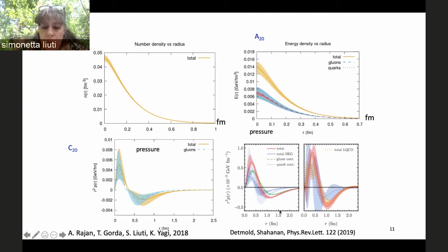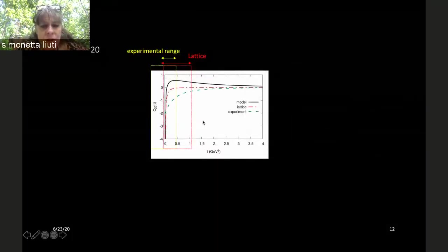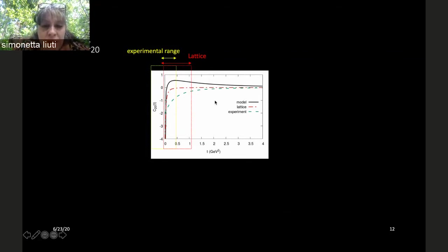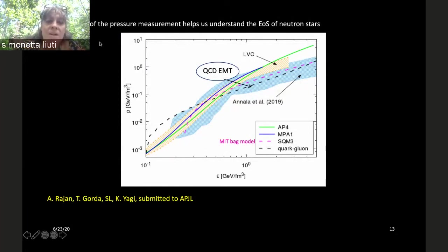I'd also like to point out this paper by Detmold and Shanahan that calculated the gluon and quark moments and their Fourier transforms. However, there's an issue: to perform these Fourier transforms we need a large experimental range in t, going all the way to the multi-GeV region. All the evaluations shown are model dependent because we need to extrapolate into regions not yet measured and not yet calculated on the lattice.